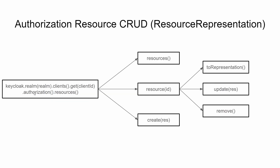For the authorization resource, authorization.resources().resources() gives us the list of ResourceRepresentations. Unlike users and roles where we use .list(), here we use .resources() to get the list. .create() with a ResourceRepresentation will create a new resource. .resource(id) provides a pointer to that specific resource, and .toRepresentation() gives the ResourceRepresentation object. .remove() deletes the resource — note it's .remove() here, not .delete(id). And .update() will update that specific resource.